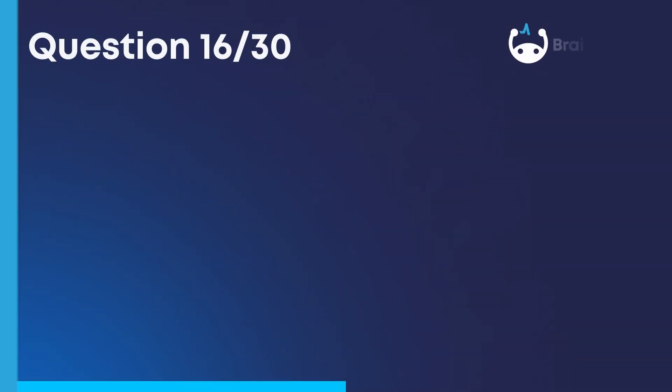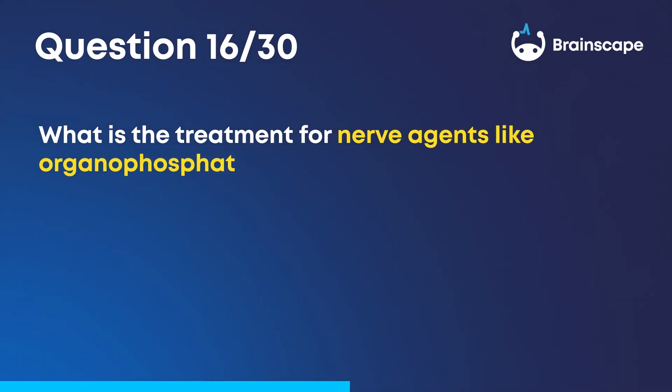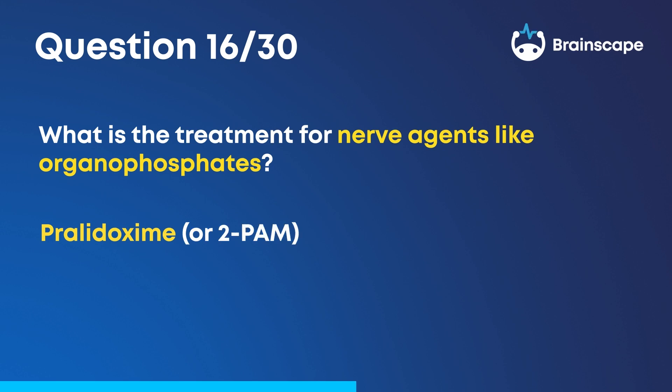Question 16. What is the treatment for nerve agents like organophosphates? Pralidoxime (2-PAM) and atropine.